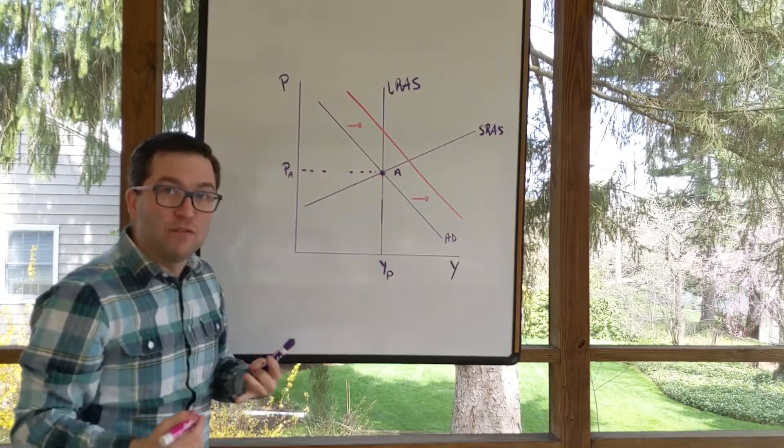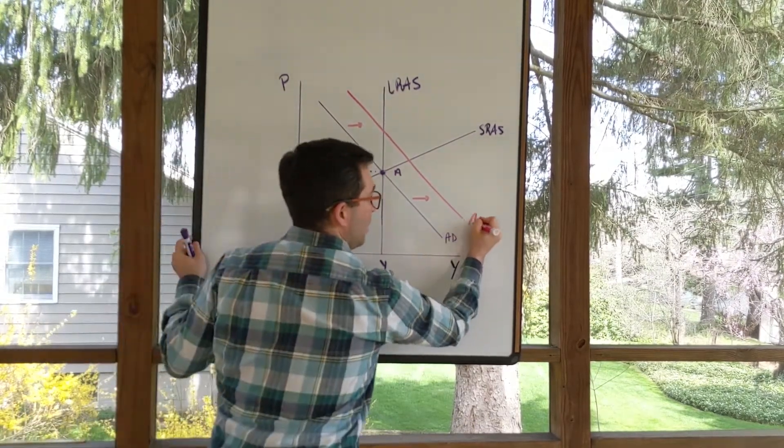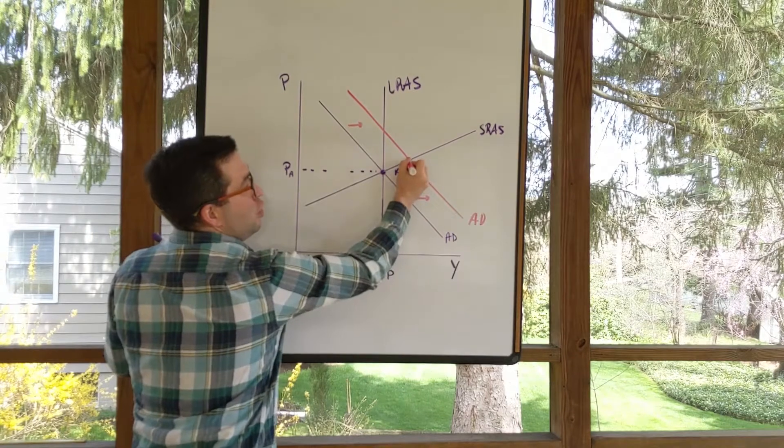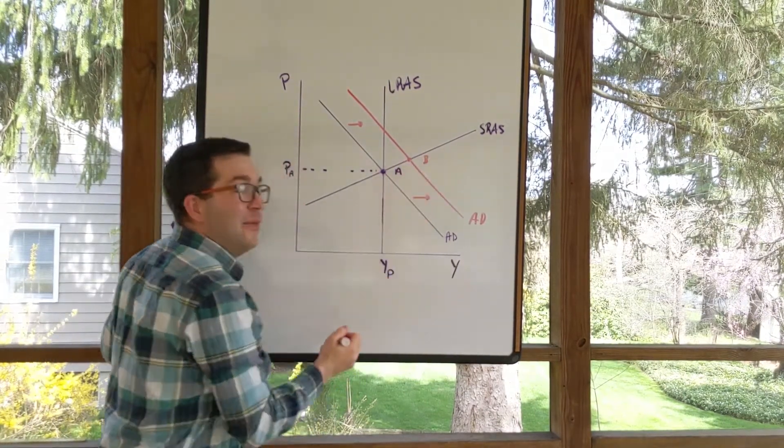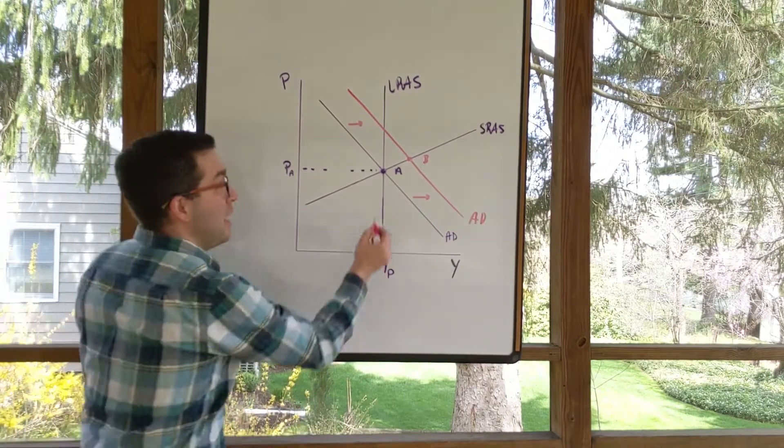And so we have that rightward shift of aggregate demand. Let's call this new short run equilibrium point B. And we see there's an increase in aggregate demand.